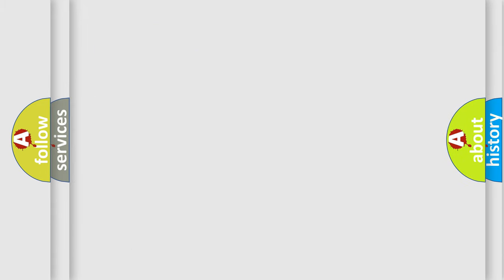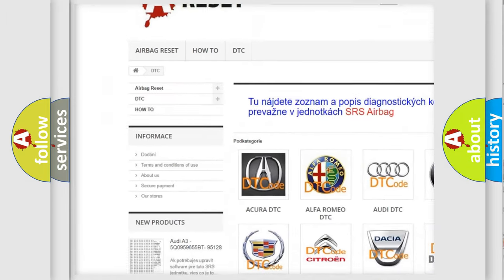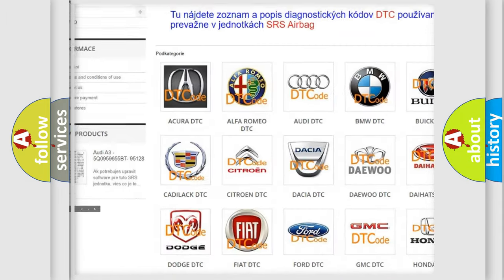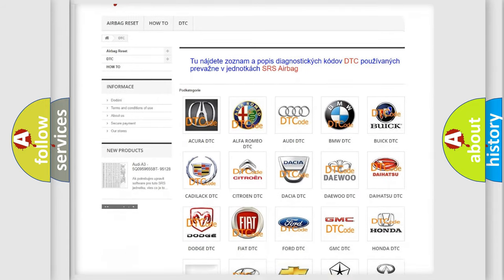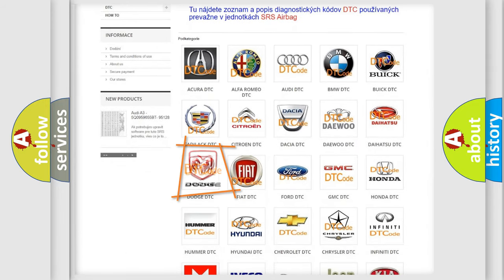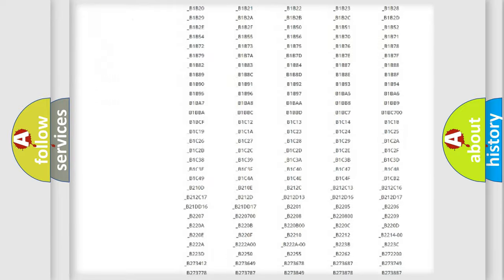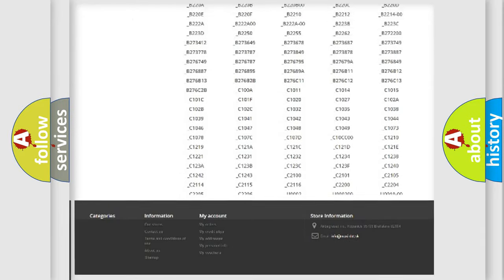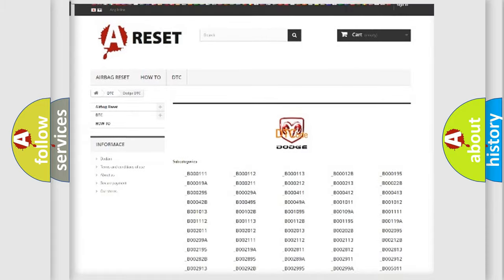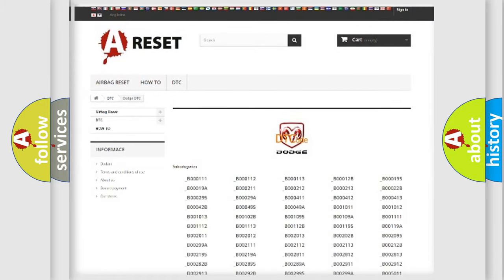Our website airbagreset.sk produces useful videos for you. You do not have to go through the OBD2 protocol anymore to know how to troubleshoot any car breakdown. You will find all the diagnostic codes that can be diagnosed in Dodge vehicles, and also many other useful things.